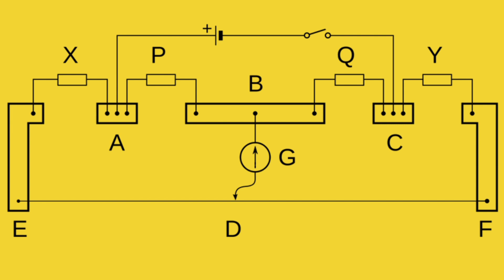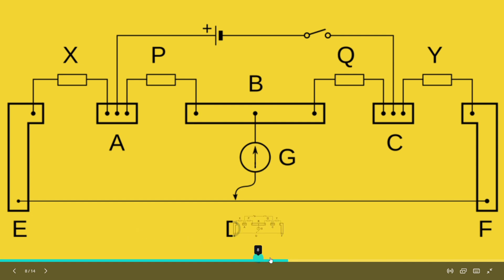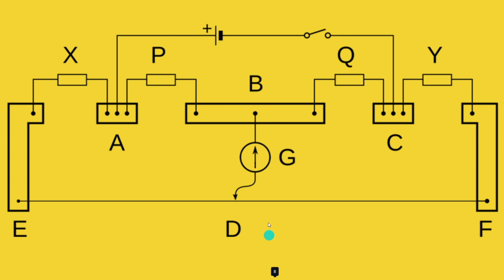As we can see in the diagram, the two low resistances P and Q are connected in the inner gaps and the known resistance X and the unknown resistance Y are connected in the outer gaps. A 1 meter long resistance wire of uniform cross-section is soldered to the ends of the two copper strips. A galvanometer G is connected between terminal B and the jockey D. A lead accumulator and a one-way key are connected in series in terminals A and C.